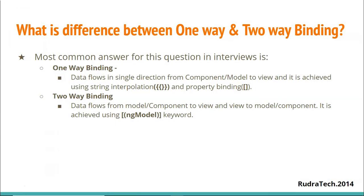Now, coming to our question: what is the difference between one-way and two-way binding? The most common answer given is that one-way binding is where data flows in a single direction from the component or model to the view, achieved using string interpolation and property binding. Two-way binding is where data flows from component to view and from view back to the component, achieved using the ng-model directive.